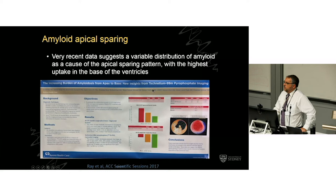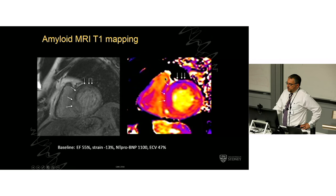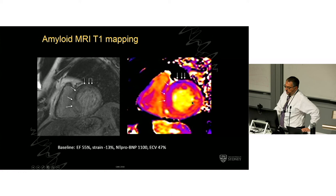MRI has a role to play — the so-called T1 mapping, which measures water. It turns out that the more extracellular protein there is, the more extracellular water there is. We look at this T1 map and look for extracellular water volume. Normal people are in the 20s; this example is 47%. Normal ejection fraction, low strain, high BNP meaning high filling pressure, and lots of extracellular water. So MRI now has a role.